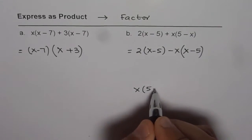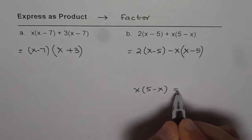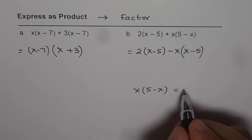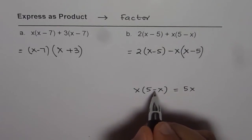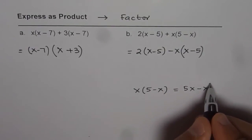If I multiply, I get 5x. x times x with a minus sign is minus x square.